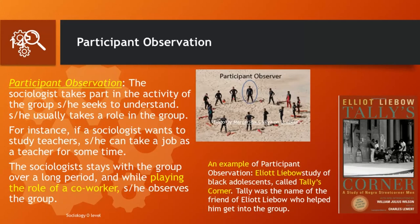Besides semi-structured and unstructured interviews, there is also participant observation. There are two types of observation: participant and non-participant. In participant observation, the researcher is studying a group of people and is part of that group, assuming a role within that group so as to allow study of the group. As the illustrations show, the researcher is engaged in the same activities as the group. He assumes a role there and is part of the group he is studying — we call this participant observation.